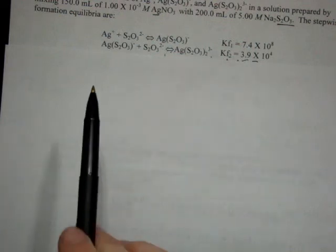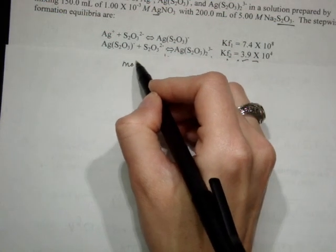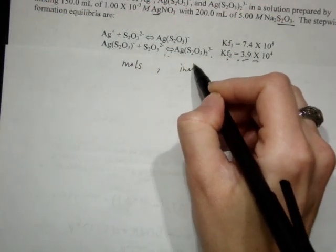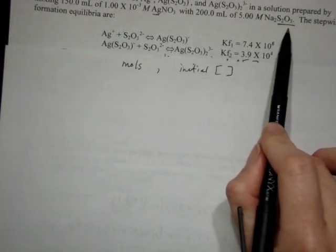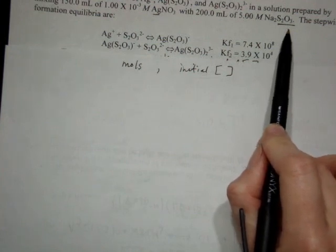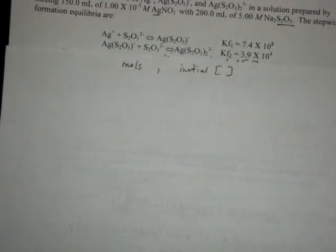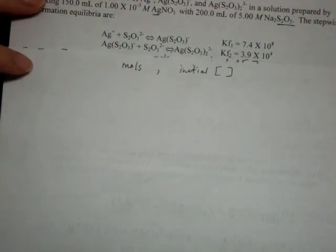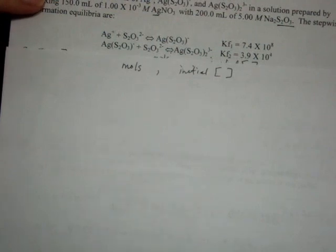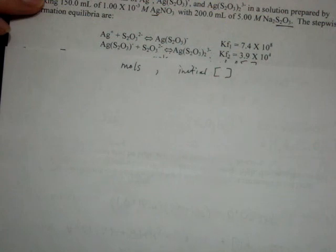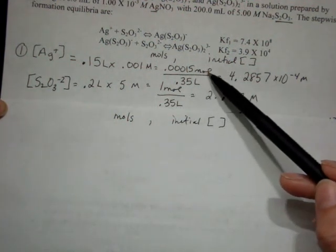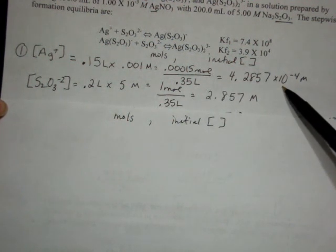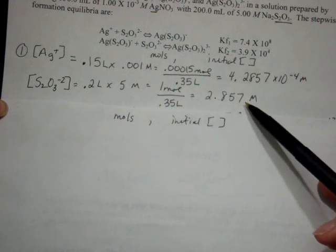So the first thing that I want you to do is that I want you to find the moles and the initial concentration for both the silver ion and for the thiosulfate ion. So pause it here and try to do that, and then I'm just going to show you what those values are in a few seconds. Hopefully you paused it and tried it yourself. You ended up with 0.00015 moles of silver and that concentration or one mole of thiosulfate and that concentration.